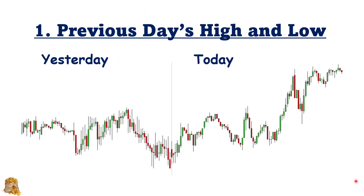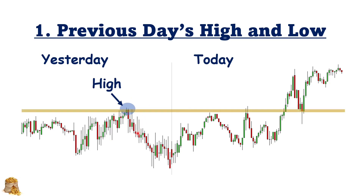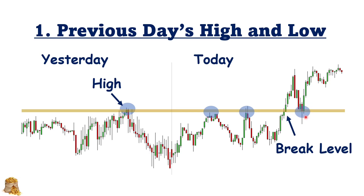How to identify the support and resistance levels? There are a few scenarios. The first one is you can use the previous day's high or low. In this chart we can see yesterday we have a high, and then we can draw a level across the high horizontally. In today's chart, right after the open, the market goes up to test that high — the first time it failed, the second time it also failed, and then the market goes up again to break this level and succeeds. Then the market goes back to test this level again. So clearly the previous day's high and low can serve as very good support and resistance levels.